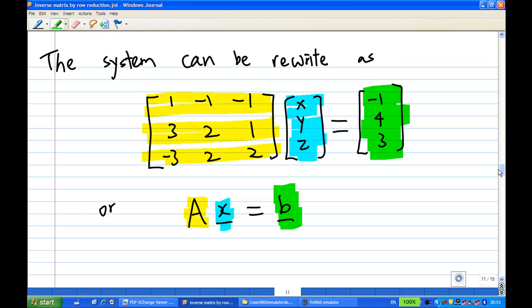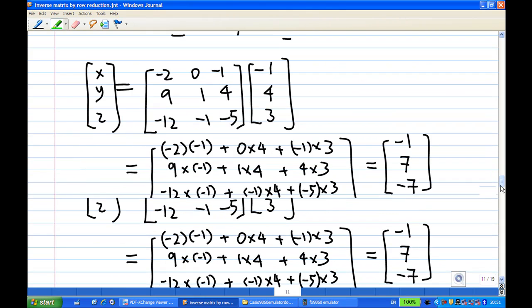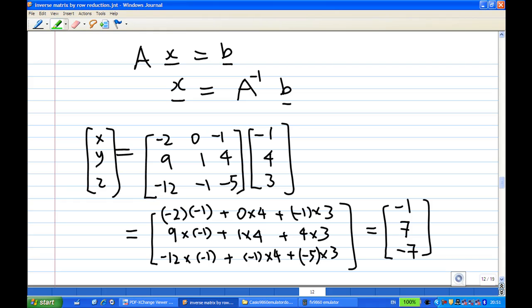Now to solve x here, or x, y, z here from Ax equals B, multiply both sides by inverse of A. So x equals A inverse times B. Now from part A, we already found out what is inverse of A. Inverse of A is minus 2, 0, minus 1, 9, 1, 4, minus 12, minus 1, minus 5. So multiply with B which is minus 1, 4, 3. After calculation, I get minus 1, 7, minus 7.